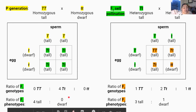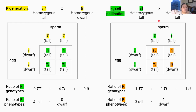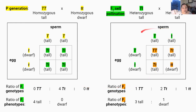When these F1 generation peas are self-pollinated or crossed with each other, they produce two kinds of gametes because they're heterozygous — either big T or small t segregates into each gamete, for both sperm and egg. When these F1 offspring are mated together, the possible genotypes of their offspring — the F2 generation, shown in orange — can be predicted by this Punnett square. The big T from parent 1 segregates into one gamete and the little t into another; similarly for parent 2.